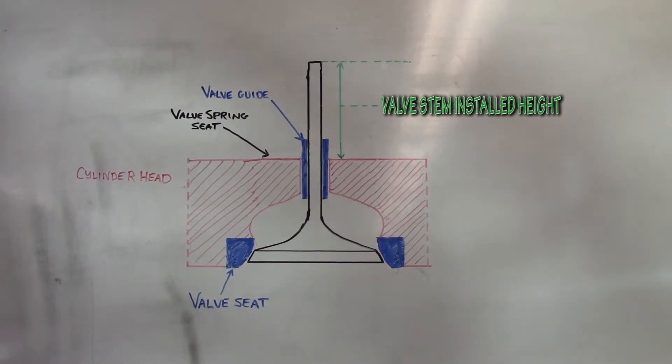In some cases, excessive valve stem installed height can be corrected by removing material up to ten thousandths of an inch off of the tip of the valve.